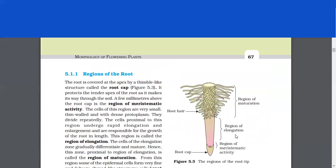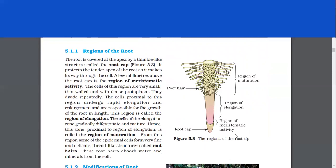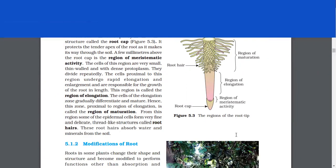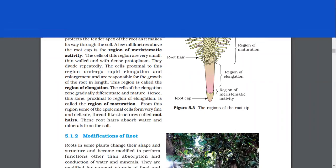Regions of the root. The root is covered at the apex by a thimble-like structure called the root cap. It protects the tender apex of the root as it makes its way through the soil. A few millimeters above the root cap is the region of meristematic activity. The cells of this region are very small, thin-walled and with dense protoplasm. They divide repeatedly.